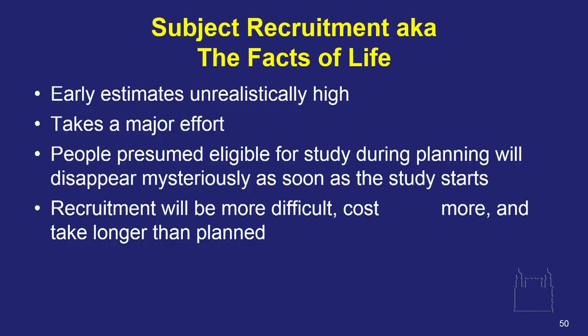One thing I want to emphasize again is something called the facts of life, or subject recruitment. Your early estimates are usually unusually high. You think you'll have all these patients, and then suddenly, two days after you start enrolling in your trial, the 700 people who you thought were eligible disappear. So recruitment is going to be more difficult. It is going to cost you more money and take longer than you planned. So plan for that. It is like renovating your house — it will always take more money and more time.